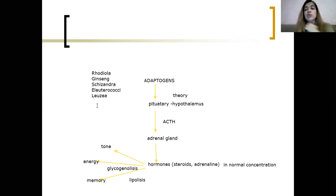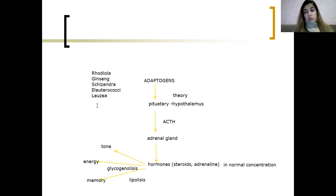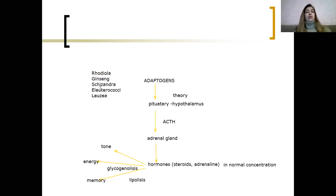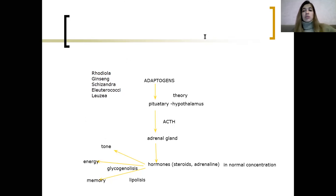Also Leuzea is used in Russia. These are only some examples of plants used as adaptogens, and I'm sure that in your country you have many more adaptogens than in Russia.